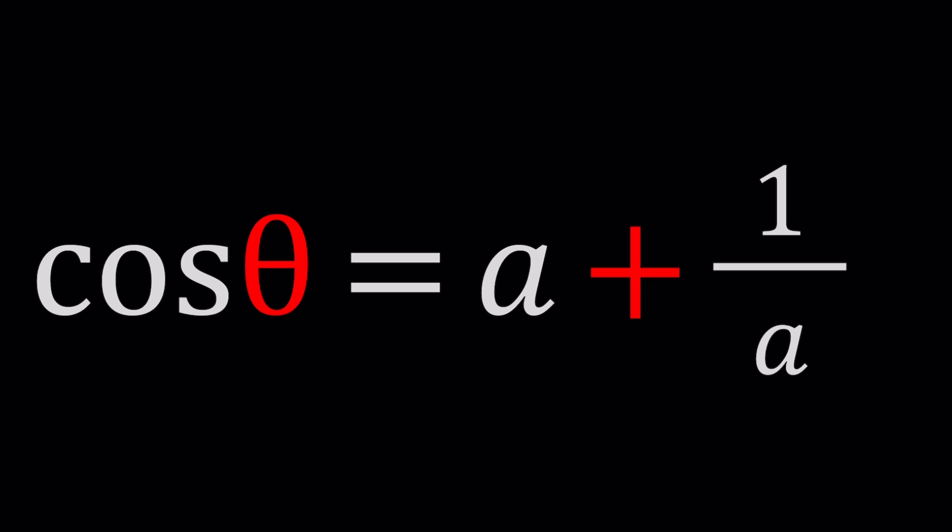We have cosine theta equals A plus 1 over A and we're going to be solving for theta. Obviously because A is a given number. I want to pose a question: why do you think this appears on a channel that focuses on complex numbers? What does this have to do with complex numbers?